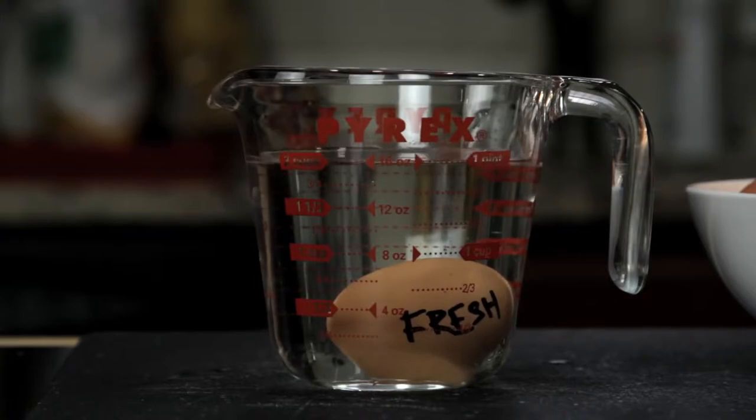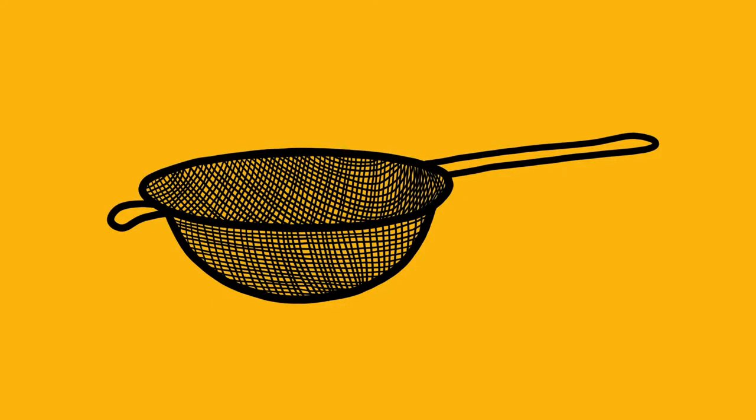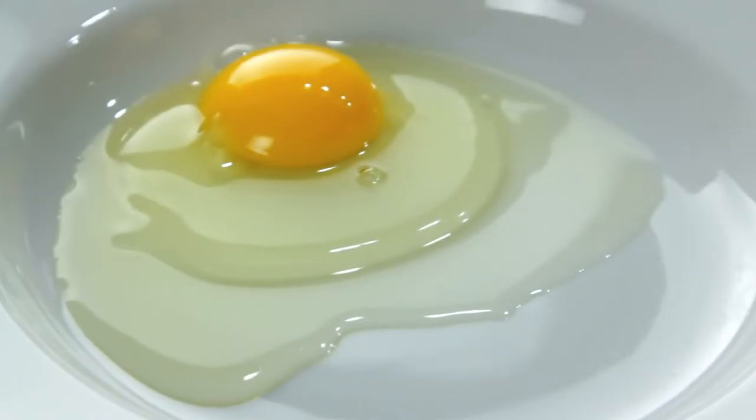Once you've got your fresh egg, the second tool you need is something that I saw first suggested by British chef Heston Blumenthal, a fine mesh strainer. You see, no matter how fresh your eggs are, there's always going to be some amount of liquid white.